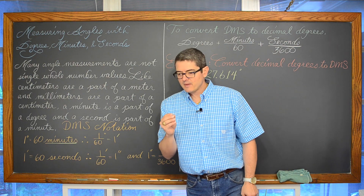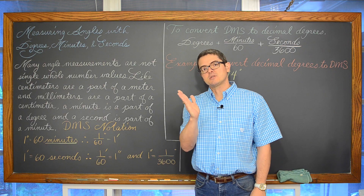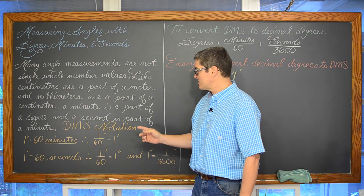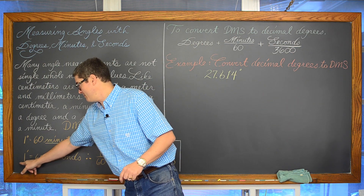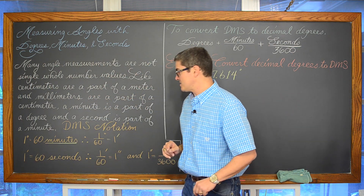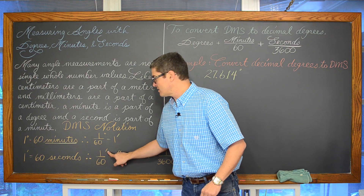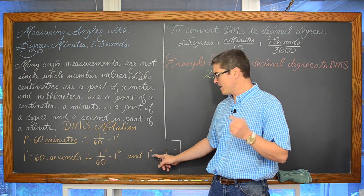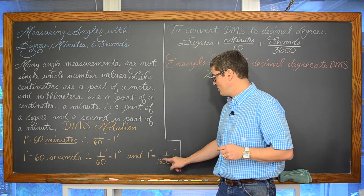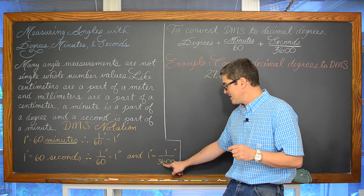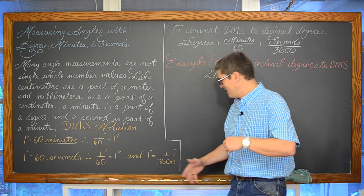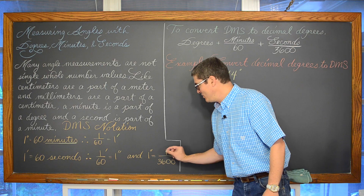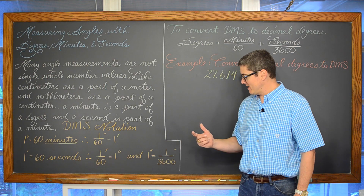If breaking a degree down into 60 parts isn't giving you an accurate enough measurement, you can then take those minutes and split them up again. One minute is equal to 60 seconds. So one sixtieth of a minute is one second, and thus one second is equal to one thirty-six hundredth of a degree — very, very minute parts of an angle measure.